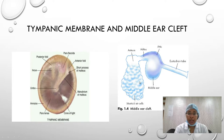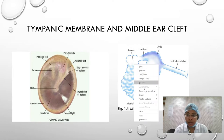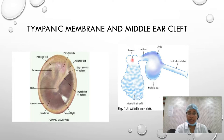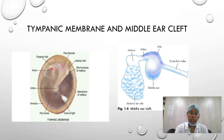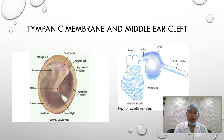Looking at the normal middle ear cleft anatomy, it consists of the eustachian tube anteriorly, the middle ear, the attic, the aditus connecting the middle ear with the mastoid antrum, and the mastoid air cells. The tympanic membrane has the pars tensa separated from the pars flaccida above it by malleolar folds — the posterior malleolar fold and the anterior malleolar fold — and the handle of malleus.